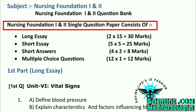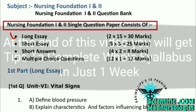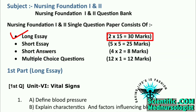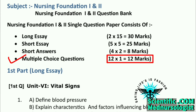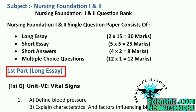The subject question paper consists of 4 parts: Part 1 is the long essay part, which carries 30 marks — 15 marks for each question. Part 2 is the short essay part, which carries 25 marks — 5 marks for each question. Part 3 is the short answers part, which carries 8 marks — 2 marks for each question. Part 4 is MCQ, which carries 12 marks — 1 mark for each question. Let's start from the long essay part.